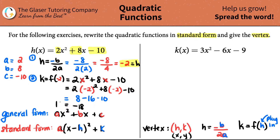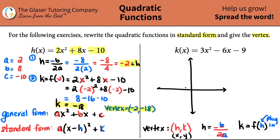That all equaled k — negative 18. So now we have our h value and our k value. The vertex is h comma k, which is negative 2 comma negative 18. On a graph, that vertex would be over 2 and down 18. Since our a value is positive, the graph is going to smile — a positive a gives a smiley face, a negative a gives a frowny face. So we have a minima here.